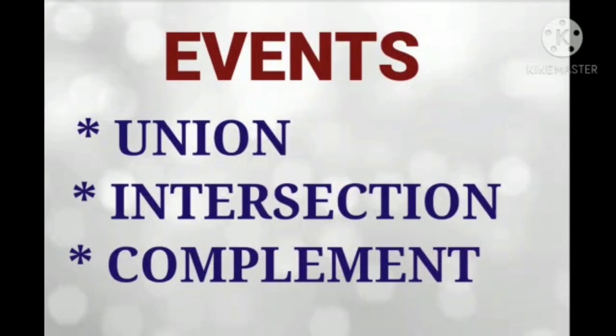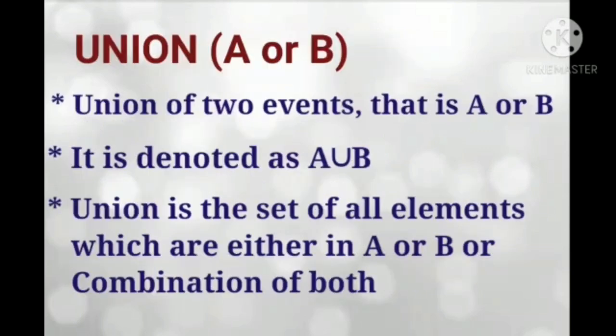Hi friends, here I would like to talk about the topic union, intersection and complement of events. The first one is union. Union of two events, that is A or B, is denoted as A union B. Union is the set of all elements which are either in A or B or a combination of both.